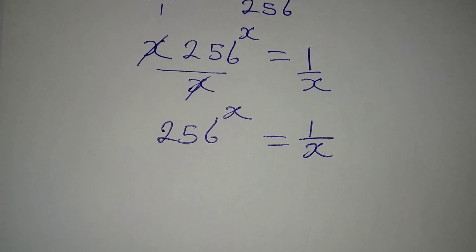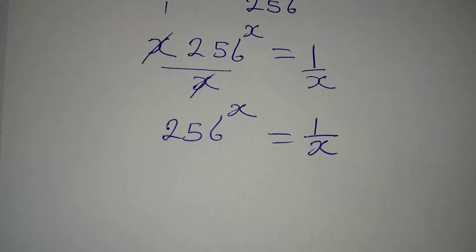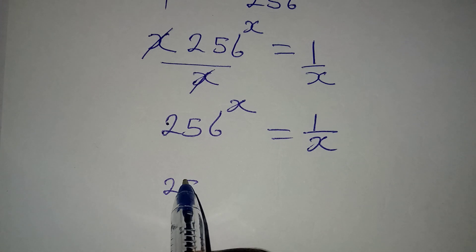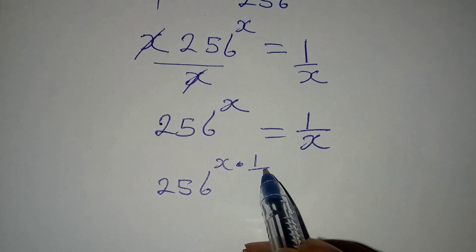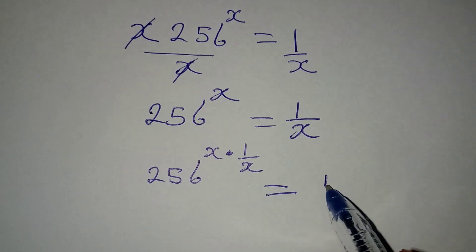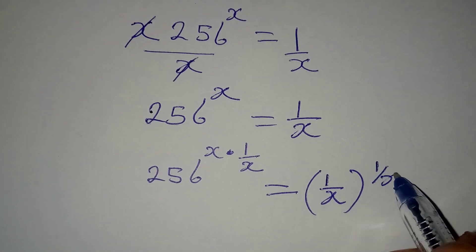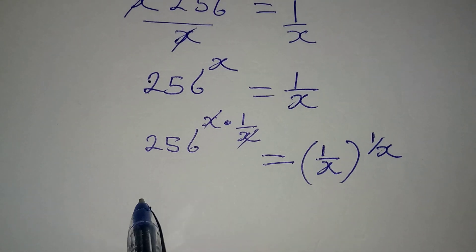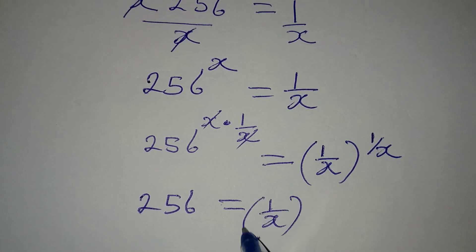To remove the exponent x, we multiply that power by 1 over x. So we raise both sides to the power of 1 over x: 256^x raised to 1/x on the left, and (1/x) raised to (1/x) on the right. The exponents cancel on the left, giving us 256 = (1/x)^(1/x).